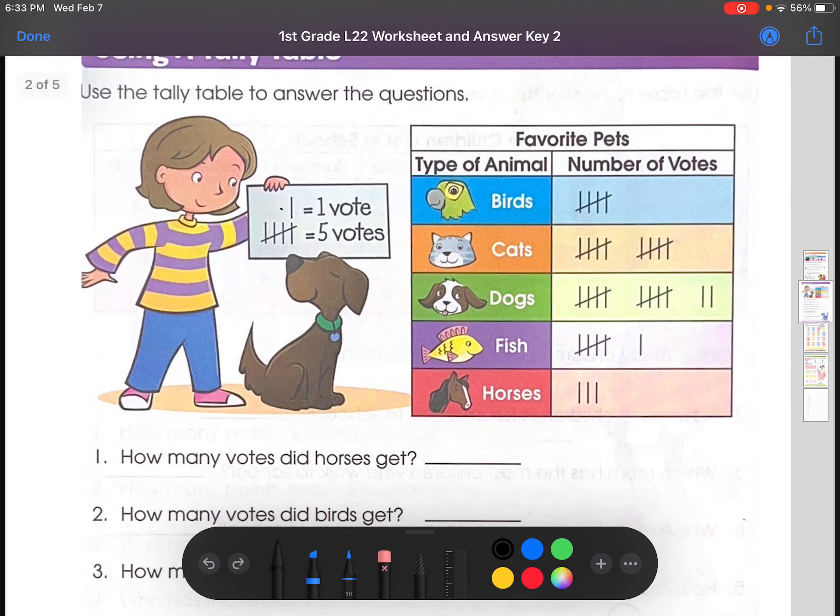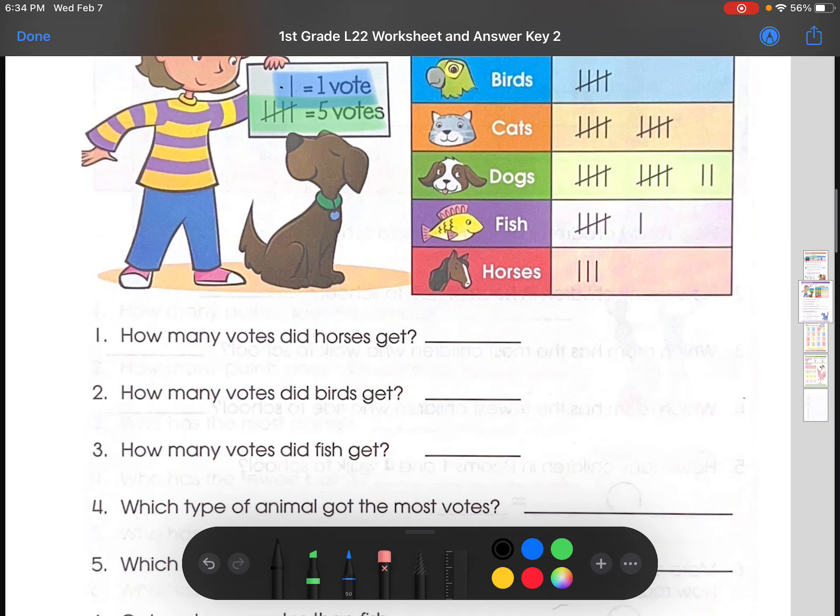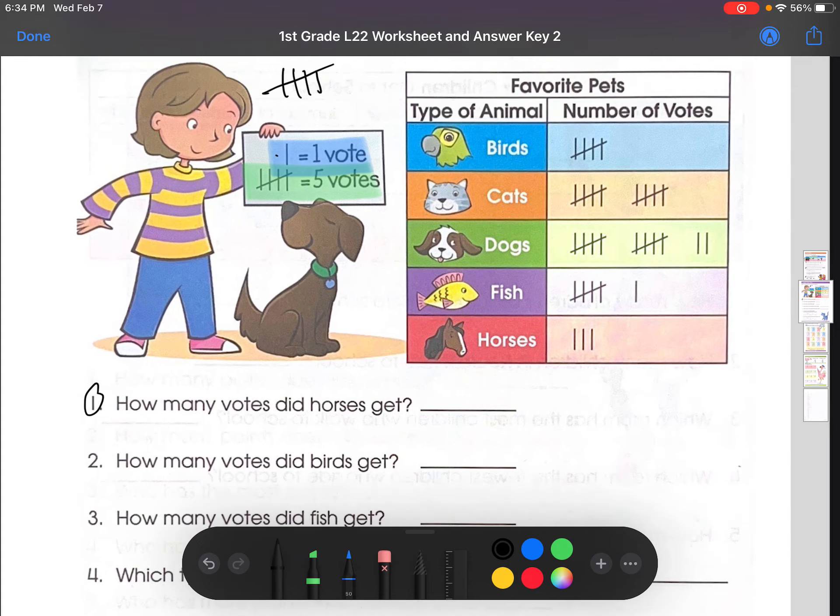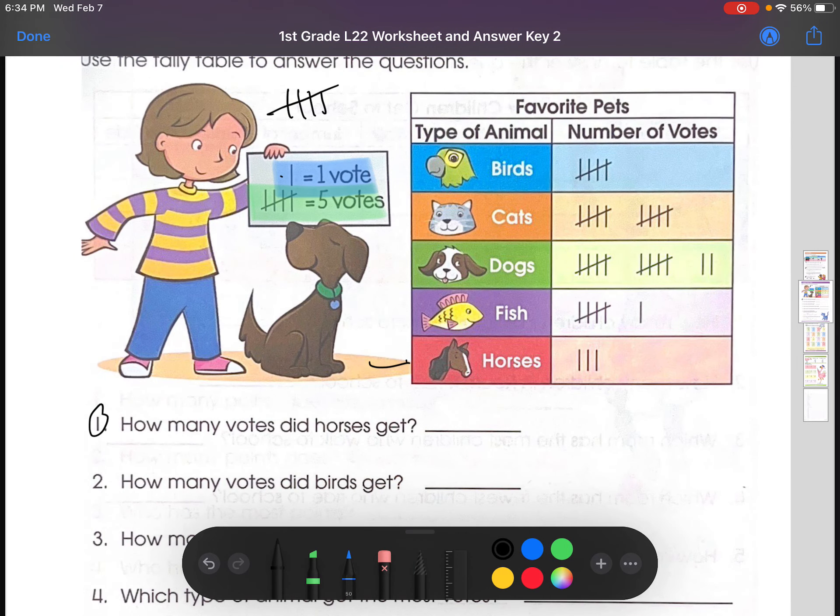You should know that this is 1, just a line down. 1. And if you make 2, 3, 4, and cross it, this is the 5th one. So like it says in this key right here, one line down is 1 vote. 4 lines down and 1 line diagonally is 5 votes. So let's just go straight into number 1. How many votes did horses get? So we find horses right here. And we just count the tallies. There are 1, 2, 3. So the answer would be 3.